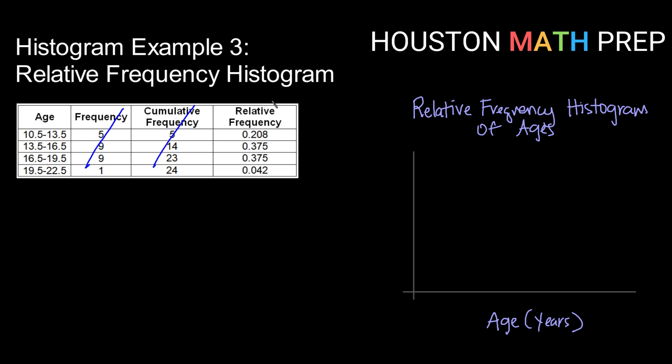My horizontal axis is going to hold my classes, so in this case that's going to be age in years. My vertical axis is going to be my relative frequencies. My horizontal axis is not going to start at zero, so I'm putting that little squiggle to indicate some missed values.